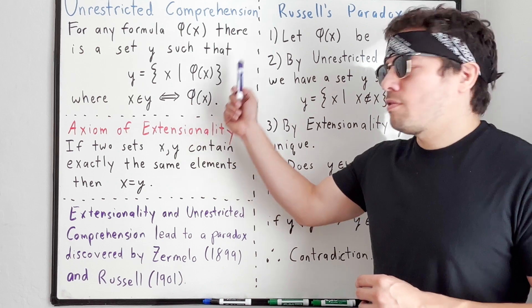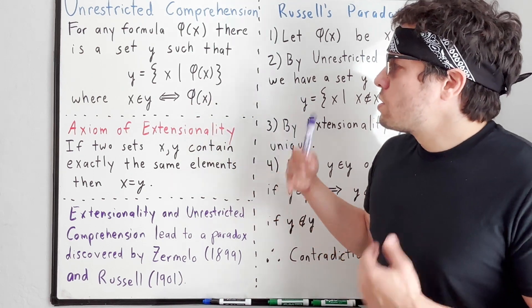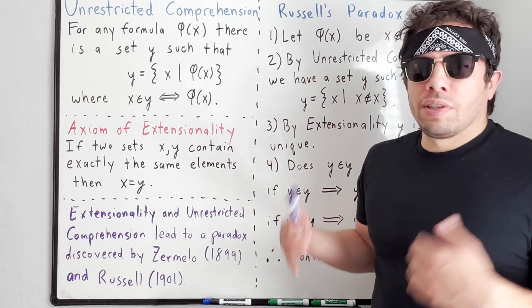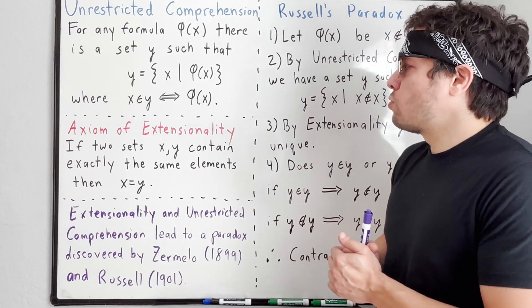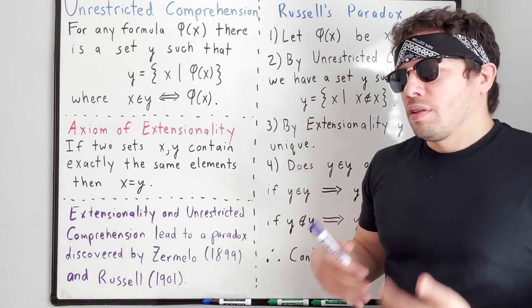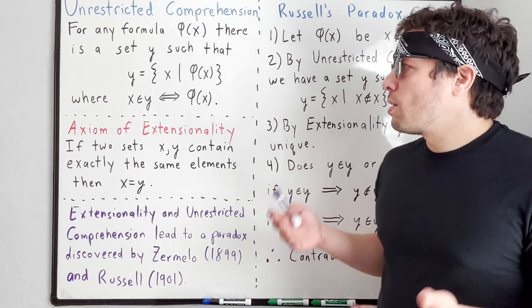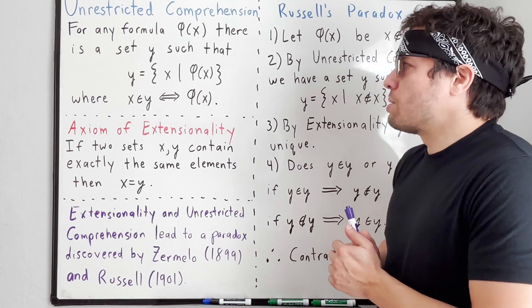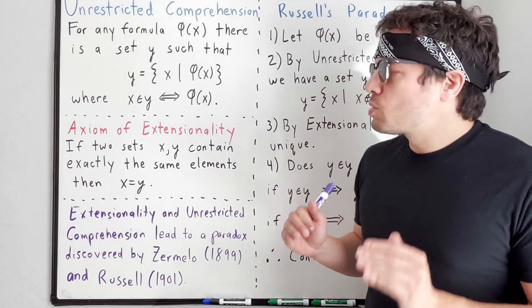In other words, x is in y if and only if φ(x) holds. So the idea is that for any formula φ, we have a set defined by this formula. Now this sounds completely logical and reasonable. It's not exactly clear that this definition here would lead to problems.